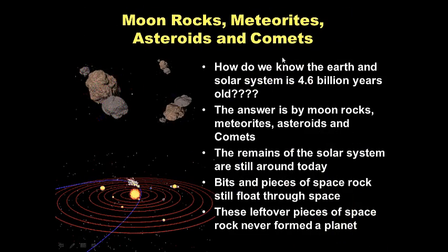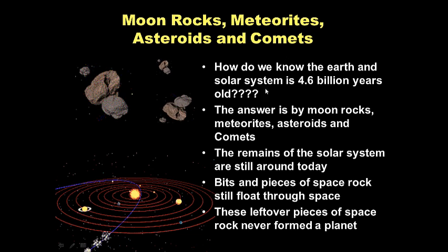Moon rocks, meteorites, asteroids and comets. Well how do we know the solar system is 4.6 billion years old? The answer is by moon rocks. The Apollo mission when we went to the moon, we brought back rocks. And the answer is also from meteorites, asteroids and comets. The remains of the solar system are still around today. Bits and pieces of space rock are still floating through space.